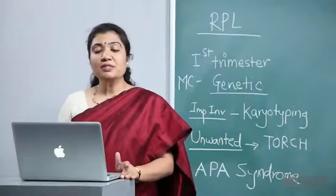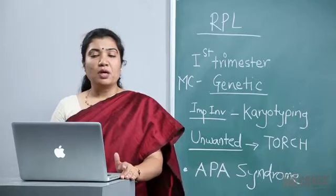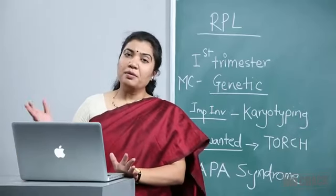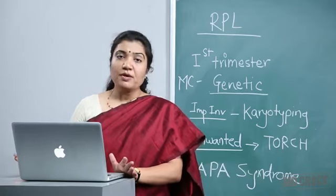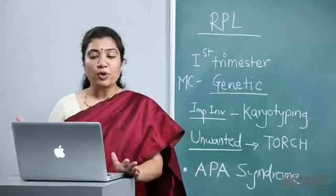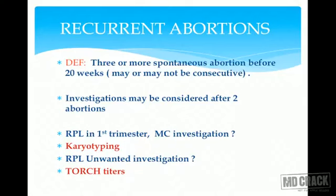Welcome to this session on recurrent abortions. By definition, recurrent pregnancy loss (RPL) or recurrent abortions means a patient has three or more spontaneous abortions before 20 weeks. These abortions may not be consecutive but are still included in the definition. You may advise a set of investigations if a patient has had two abortions — first or second trimester — we need not wait for a third abortion.